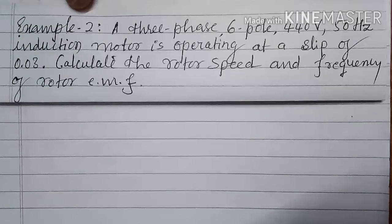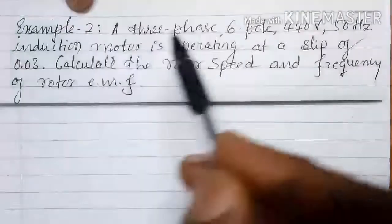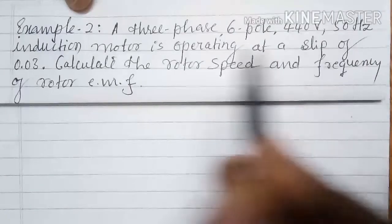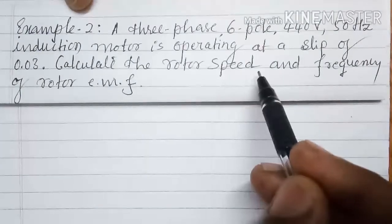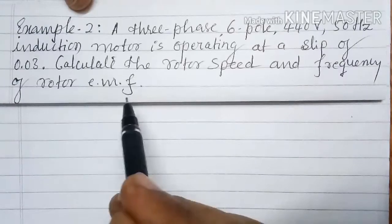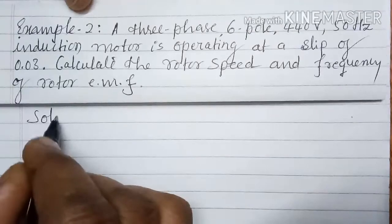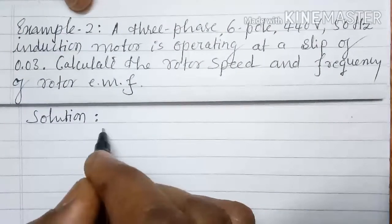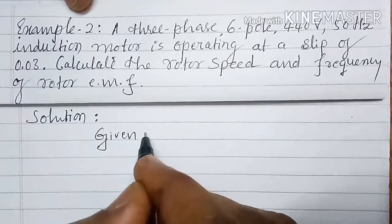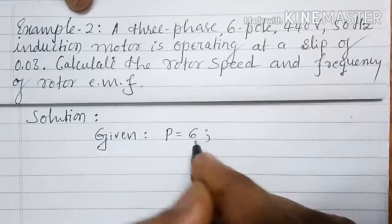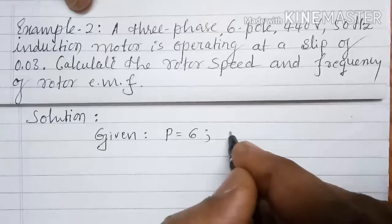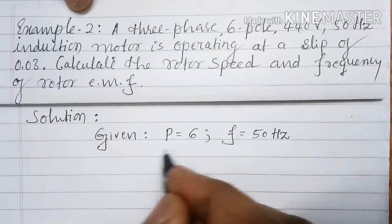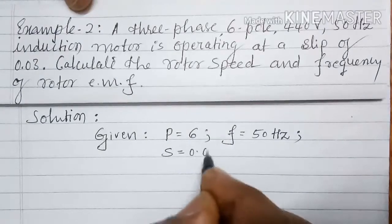Now we will take example two. A three-phase, six-pole, 440 volt, 50 hertz induction motor is operating at a slip of 0.03. Calculate the rotor speed and frequency of rotor EMF. Given: P = 6, F = 50 Hz, slip S = 0.03.